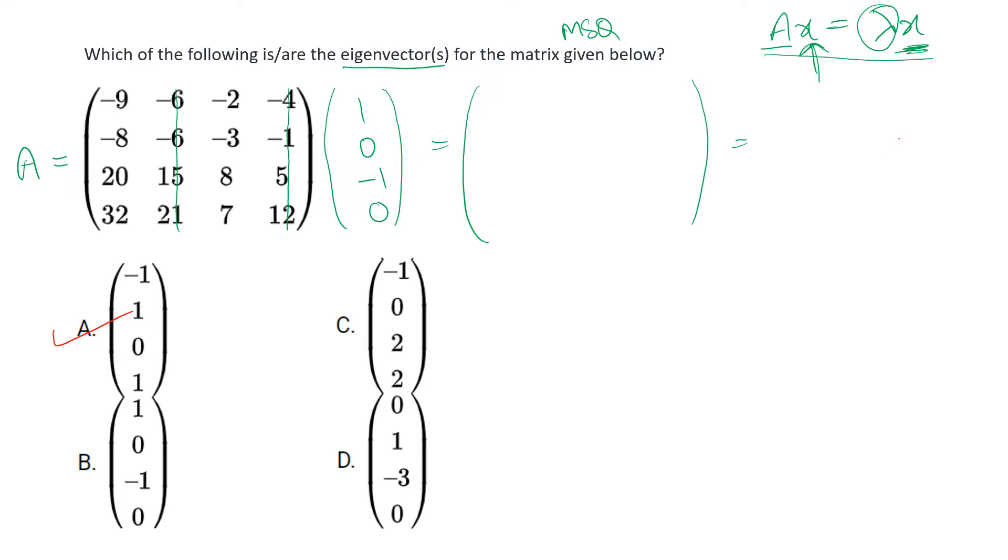This will give us minus nine into one, so minus nine plus two, eight minus eight and plus three, twenty and minus eight. Then thirty two minus seven.